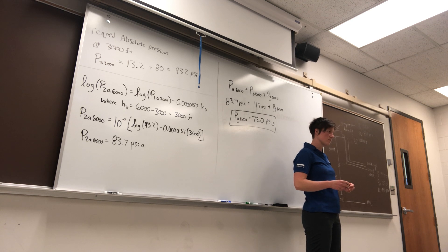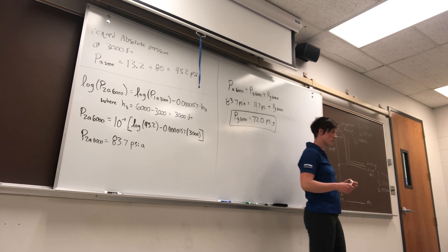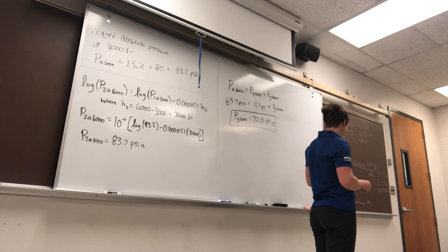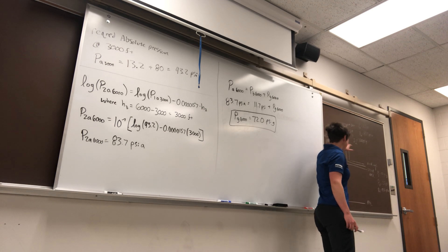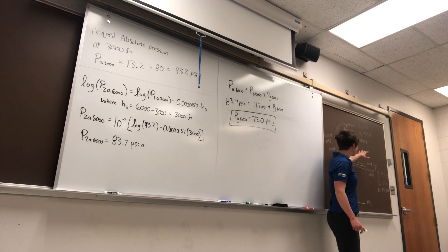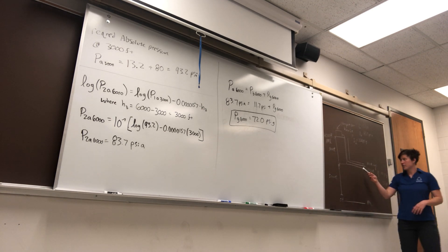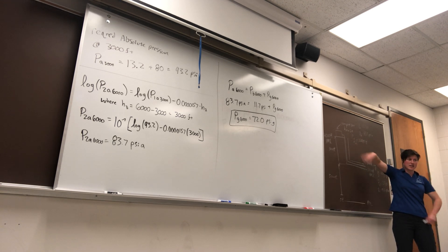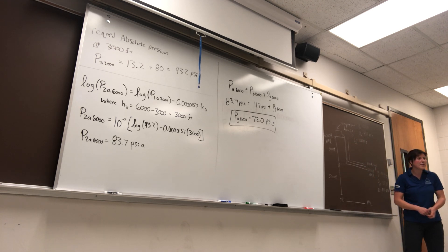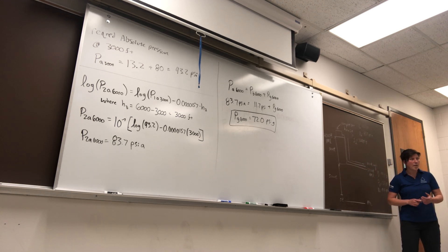You need a higher gauge pressure at the top in order to have the right gauge pressure at the bottom because you're going 3,000 feet on that line? Yes. And you usually have pressure gauges — in this case, for the air compressor I'm using for a jack leg at 80, I'd probably have like 200 PSI gauge capacity. That's usually common.